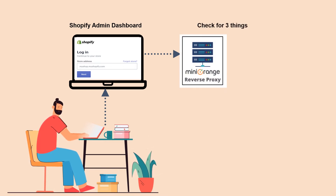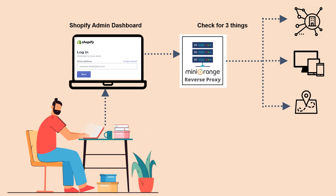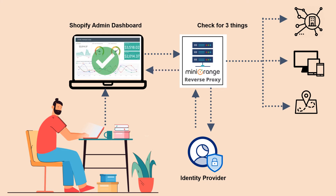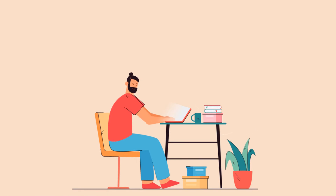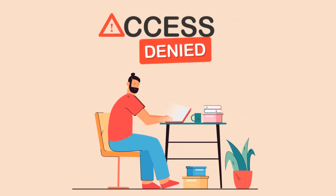The reverse proxy server will check for three things: if David is on the company network, using an authorized device, and located at the authorized geographical location. If all conditions are met, he will be authorized and the request will be sent to the IDP. The IDP will authenticate if the credentials are valid and send a SAML response back to the reverse proxy server. David will be authenticated and will be able to log in to the Shopify Store Admin Dashboard. If David fails to meet even one of the restriction conditions, the login access will be denied.